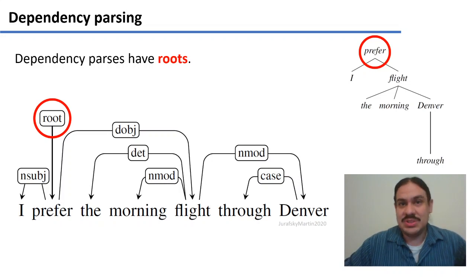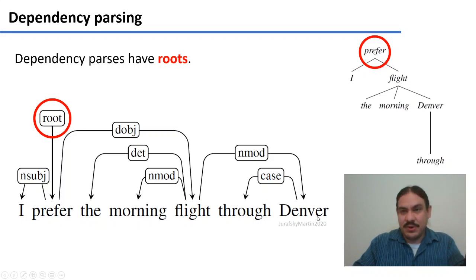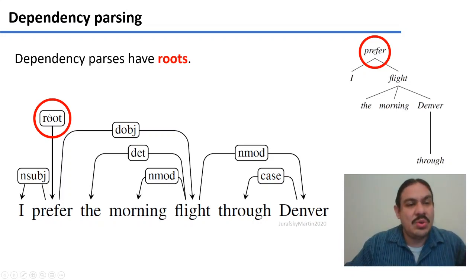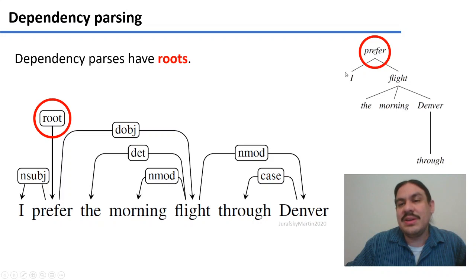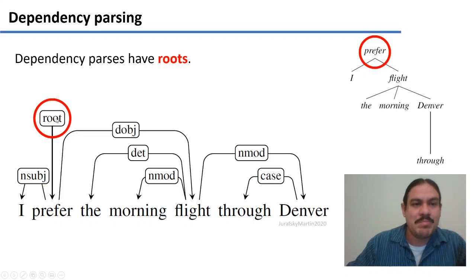Dependency parses have several components. The first is a root, which is where the graph starts. For the sentence 'I prefer the morning flight through Denver,' in English we assign the root to the verb, because this will be the unit from which all other relationships are described. So 'prefer' is the root. This parse is also shown in a simplified way that shows the words in each relationship. There's a relationship from 'prefer' to 'I' and from 'prefer' to 'flight,' but the root of the graph is on the word 'prefer.' Every dependency parse starts with a root — in English, it's usually the verb.